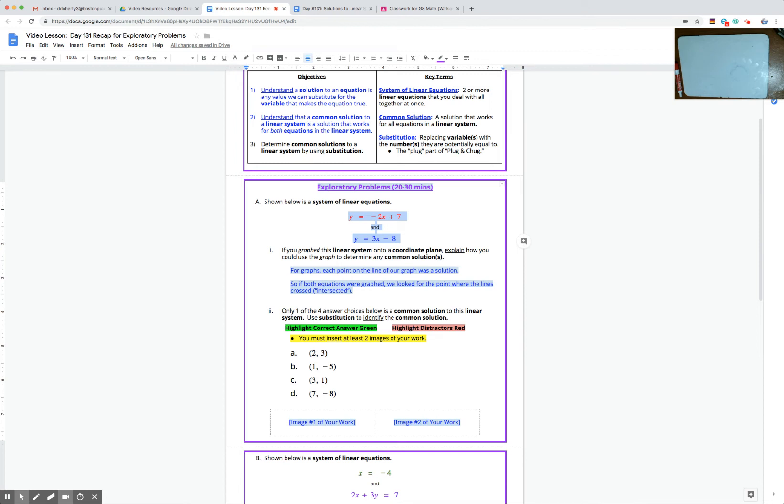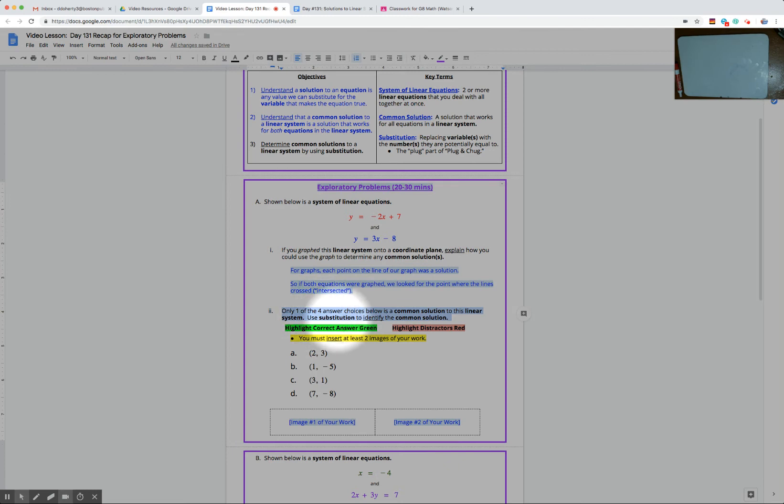But the good thing is it's multiple choice. They say one of these four answer choices has to be the common solution to our linear system. Your job is to use substitution. You're going to use substitution to identify the common solution. You all should be familiar with substitution. It's replacing a variable with the number that we think it's equal to. Mr. Neville would have called this the plug part when he said plug and chug last year when you were checking solutions to simpler equations that you were solving. So here today it's a linear equation. We have a y and an x.